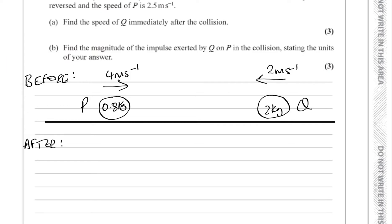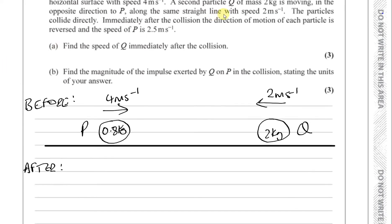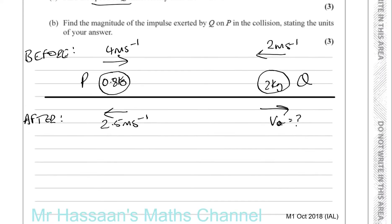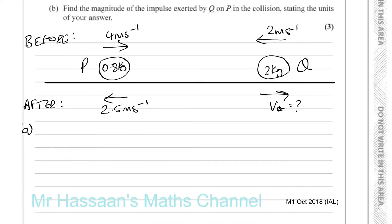After the collision, the direction of motion of each particle is reversed — so this is going in this direction and now this is going in that direction. The speed of P is 2.5 meters per second, and the speed of Q is what we don't know — that's one of the things we have to find. Let's go ahead and answer part A.